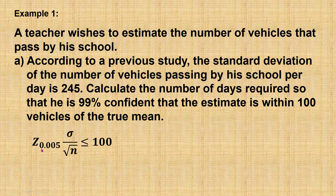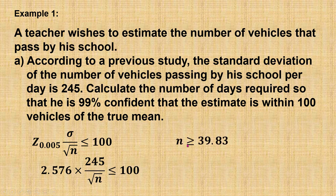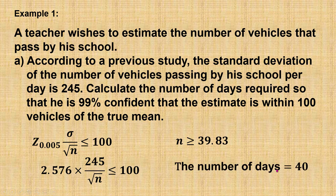From the normal table, the z value for alpha over 2 equal to 0.005 is 2.576. The standard deviation is 245. When we calculate, n is greater than or equal to 39.83. Since n represents the number of days, it must be an integer. Therefore, the number of days required is 40.